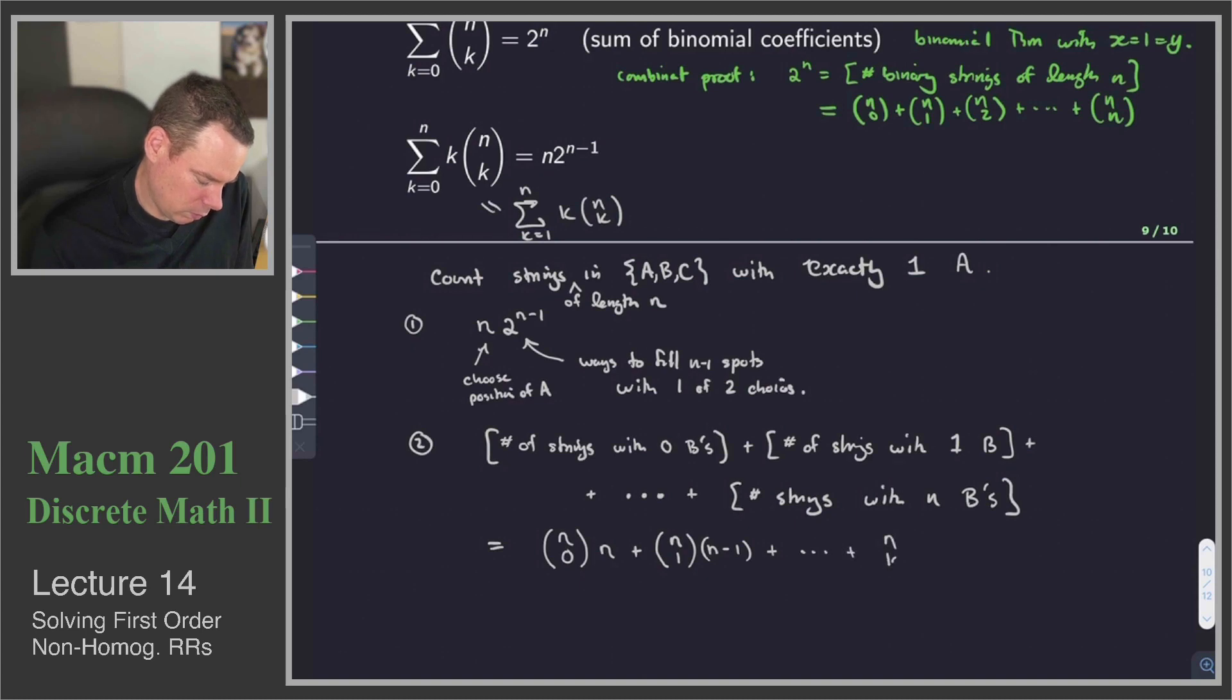So in general, if I had k b's, it would be n choose k, n minus k. All the way up to n choose n, n minus n. And that's good, because I said the number of strings with n b's should be 0, and it is in this case. That's 0.